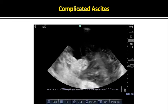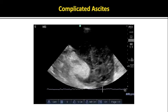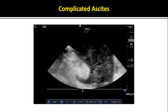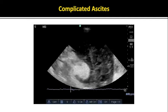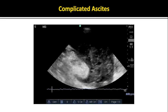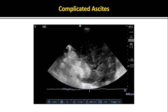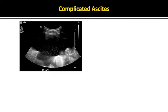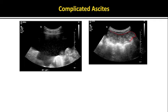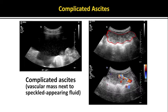Similarly, ascites that is complicated in appearance, with loculations or abnormal structures present, should be referred to our colleagues in radiology. This video shows mucinous ascites with complex appearing fluid surrounding visceral organs. This slide shows complicated ascites with a mass found adjacent to complex fluid. Doppler shows large vascular structures within the mass. Attempting this paracentesis at the bedside could have disastrous consequences.